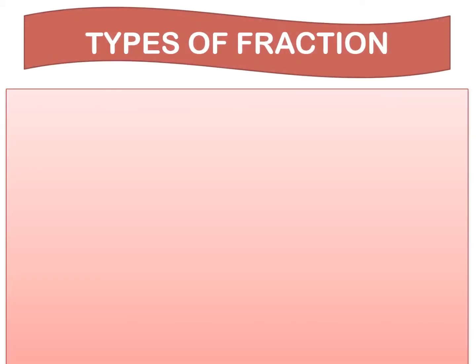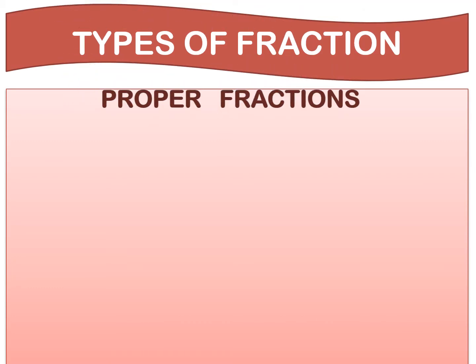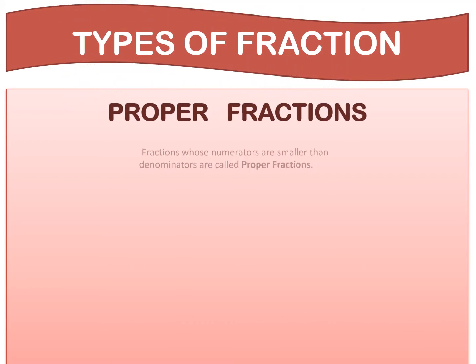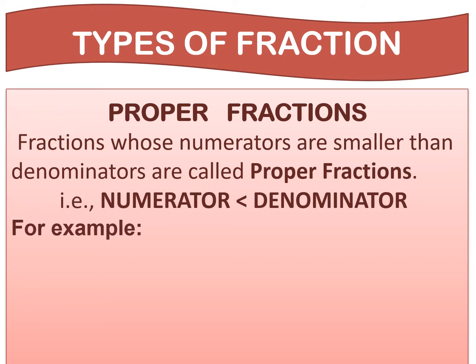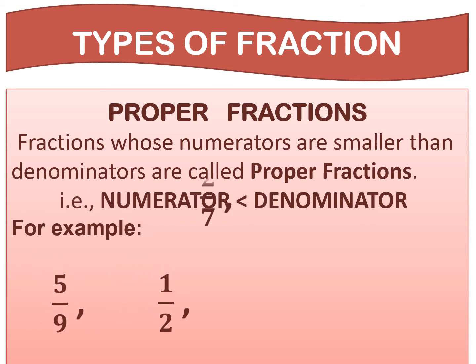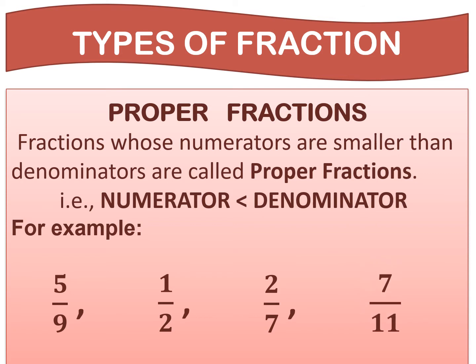The next is proper fractions. Fractions whose numerators are smaller than denominators are called proper fractions. For example, 5 upon 9, 1 upon 2, 2 upon 7, and 7 upon 11. In each case, the numerators are smaller than the denominators.